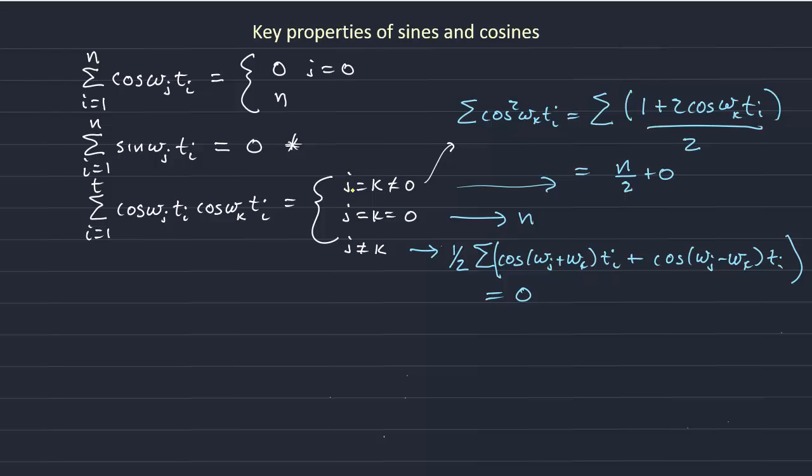So when j is equal to k, not equal to 0, the sum gives us n over 2. When j and k are both 0, the sum gives us n. When j is not equal to k, then we get 0. This last solution describes the orthogonality of cosine functions of different periods.